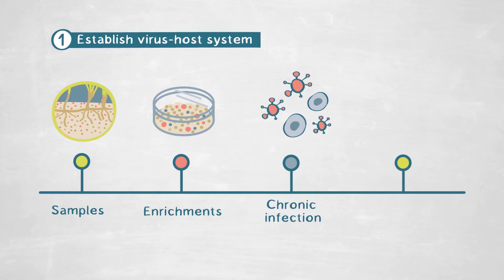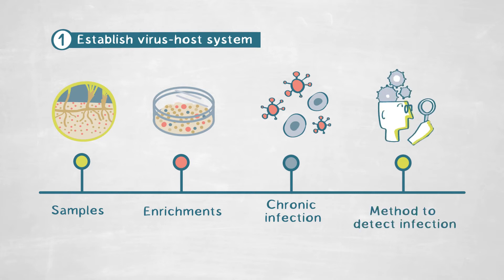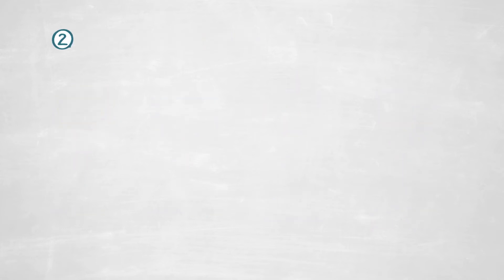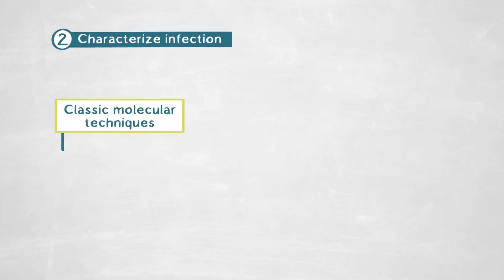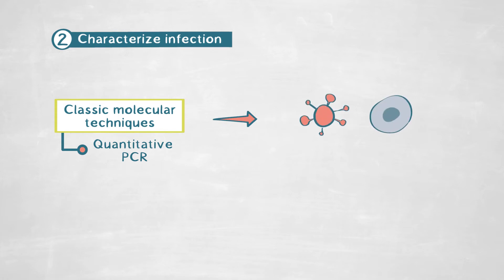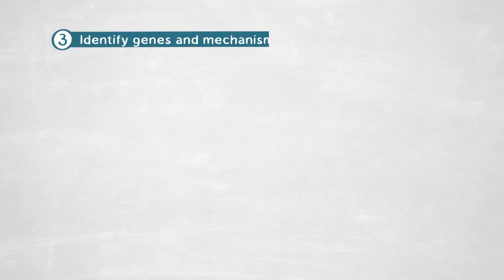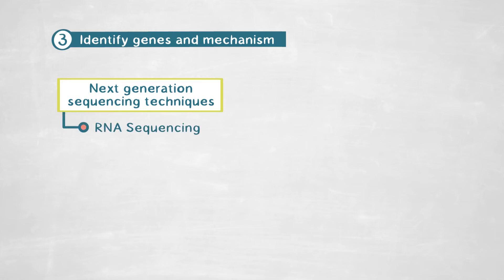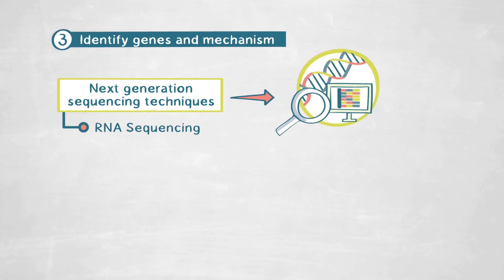Then, we had to develop a method to detect chronic infections in the samples, because all of the traditional culturing methods are designed to detect only lytic infections, which means that the host is being killed. We combined classic molecular techniques such as quantitative PCR, which allows us to assess how much viral protein is being produced and what is the outcome for the host and the virus. We combined this with next-generation sequencing techniques such as RNA sequencing, which allows us to identify specific genes in the host genome that are being up- or down-regulated by the viral infection.